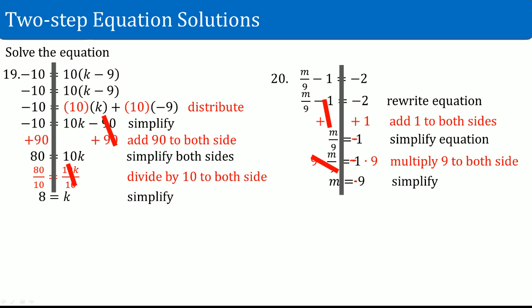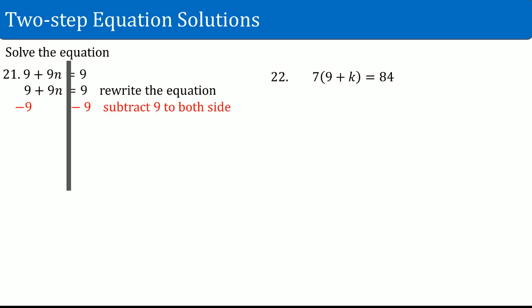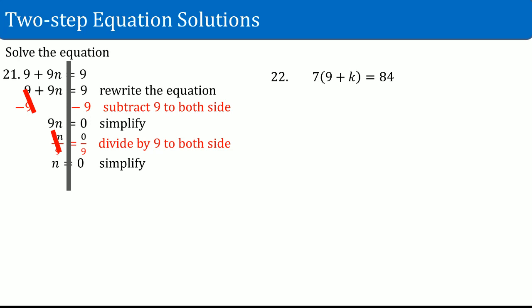Number twenty-one: 9 plus 9n equals 9. Rewrite the equation and draw a line straight down. What is attached to the variable side: an add 9 and a multiply by 9. Deal with the add 9 first — the inverse is subtract 9. Nine subtract 9 becomes 0. The left-hand side gives you 9n. On the right-hand side, 9 subtract 9 gives you 0. Divide by 9 on both sides — that cancels out. n equals 0.